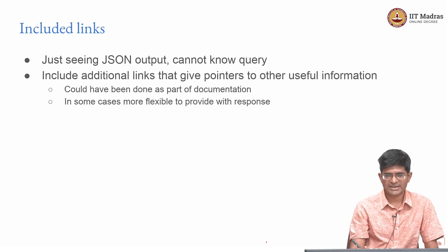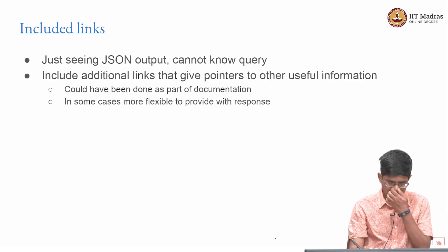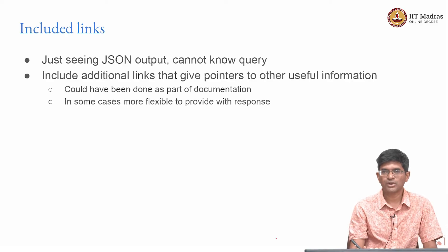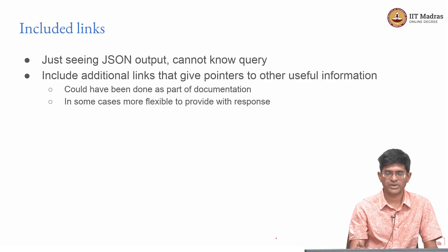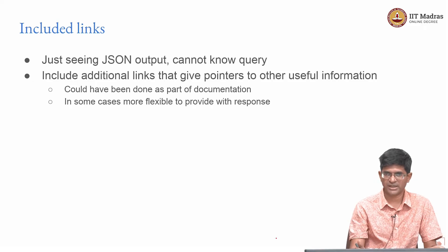A word about including links in responses — there is a recommendation to include links to various other API endpoints or URLs in the response you give as part of an API request. One reason is that if you just see the JSON output corresponding to a query, you do not really know what request led to that query. So having a self-link might seem redundant, but it is actually useful if you are trying to debug or record it for later.